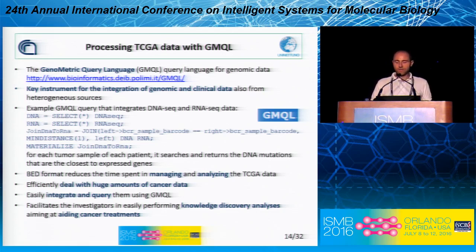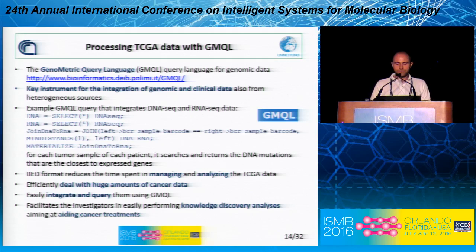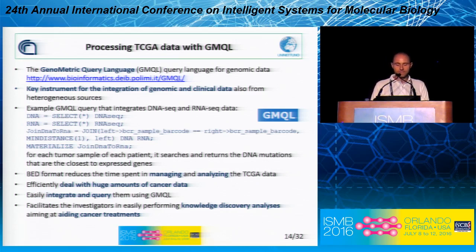GMQL is a key instrument for the integration of genomic and clinical data. It can also be integrated with heterogeneous sources like ENCODE and other data. We can see here some examples of GMQL where you can integrate DNA-seq and RNA-seq data. The BED format reduces the time to manage data, efficiently deals with huge amounts of cancer data, and easily integrates and queries the data with GMQL.